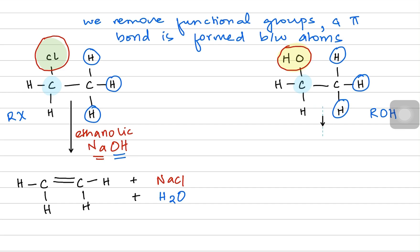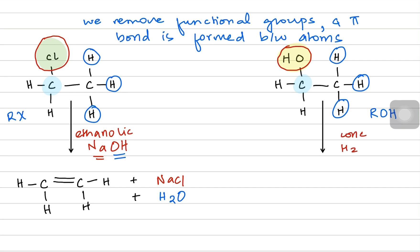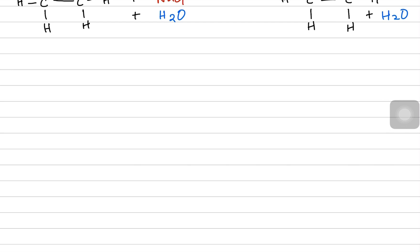When talking about alcohols, the condition we use involves concentrated sulfuric acid. What happens is the OH is gone and the H is gone; you only receive water, and the carbons form a double bond with each other. So you receive a two-carbon alkene called ethene. For alcohol, the condition for elimination is concentrated sulfuric acid, and for halogen alkanes it's ethanolic sodium hydroxide.